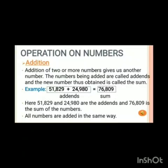Now let's discuss operations on numbers. Addition: Addition of two or more numbers gives us another number. The numbers being added are called addends and the new number thus obtained is called the sum. For example, you can see in the slide 51,829 plus 24,980 will give you the sum 76,809. Here 51,829 and 24,980 are the addends and 76,809 is the sum of the numbers. All the numbers are added in the same way.